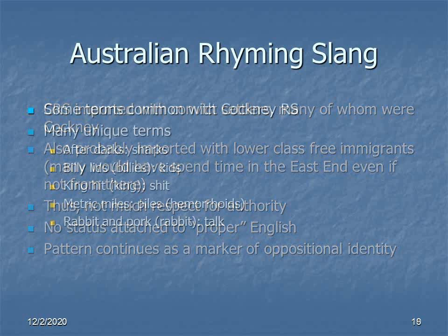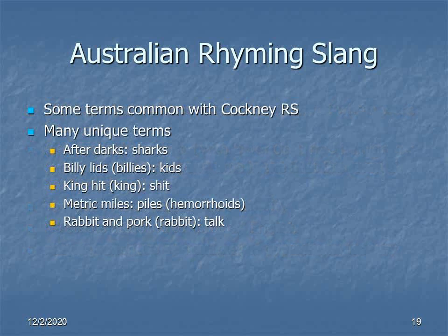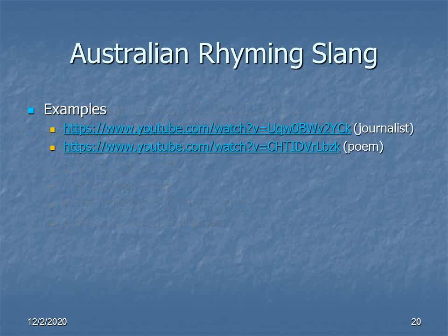I'm going to give you a handout with the lyrics and provide a link to a performance of the song in which the performer explains what some of the unique words mean. But to return to Australian rhyming slang, here are some additions the Aussies have made to that particular verbal art form: AFTERDARKS are SHARKS; BILLY LIDS or just BILLIES are KIDS; to take a KING HIT or just a KING is to take a SHIT; to have METRIC MILES is to have PILES or hemorrhoids; and RABBIT AND PORK, RABBIT AND POKE, or simply RABBIT means to TALK.